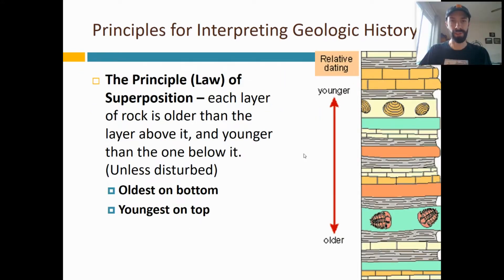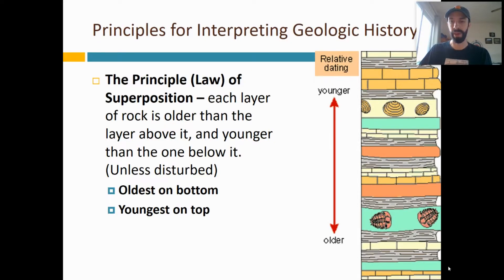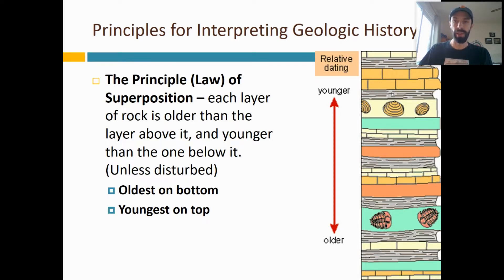Here are our principles for interpreting geologic history. Number one is the law of superposition: the oldest rock layers are going to be on the bottom and the youngest on top. That's pretty obvious — it's like the rocks I showed you earlier, unless there's some type of disturbance. The first rock deposited would be at the very bottom, and everything else came after, stacking on top. So the oldest rock is on the bottom, the youngest on top, and from that we can figure out that fossils found lower down are older than fossils found higher up.